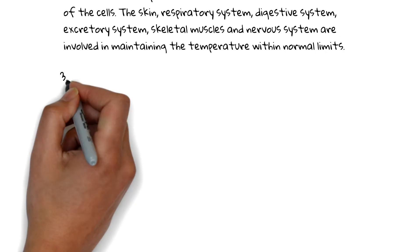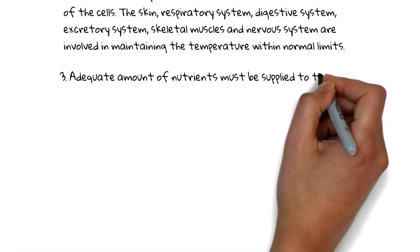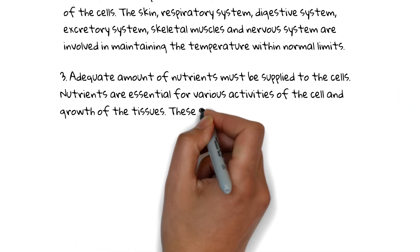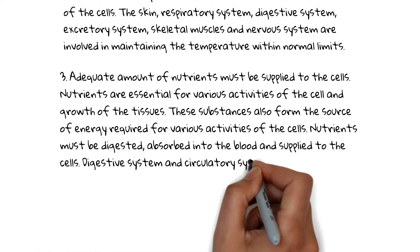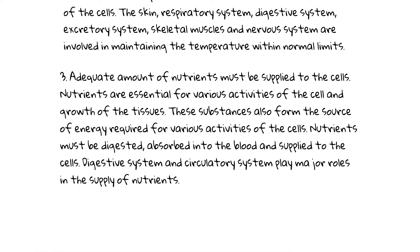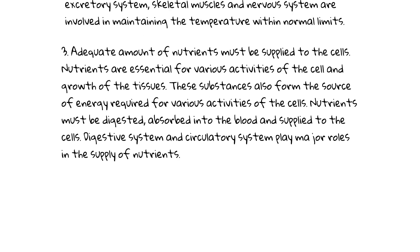Adequate amount of nutrients must be supplied to the cells. Nutrients are essential for various activities of the cell and the growth of the tissues. These substances also form the source of energy required for various cellular activities. Nutrients must be digested, absorbed into the blood, and supplied to the cells. The digestive system and circulatory system play major roles in the supply of nutrients.